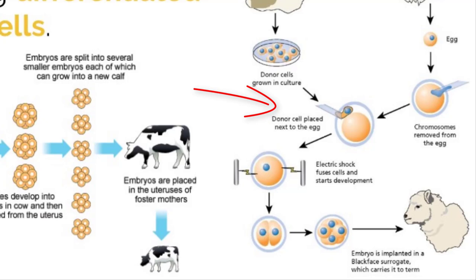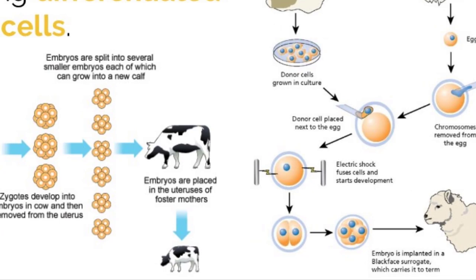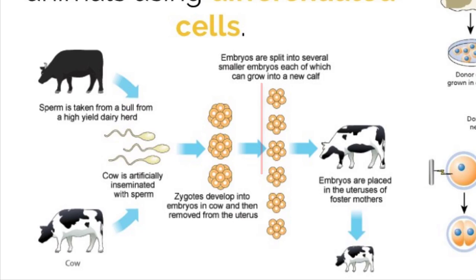Another artificial method of cloning is called embryonic division. This involves artificially splitting a developed embryo into multiple parts and implanting them into surrogates, which will take them to term — again making identical clones of the original embryo.